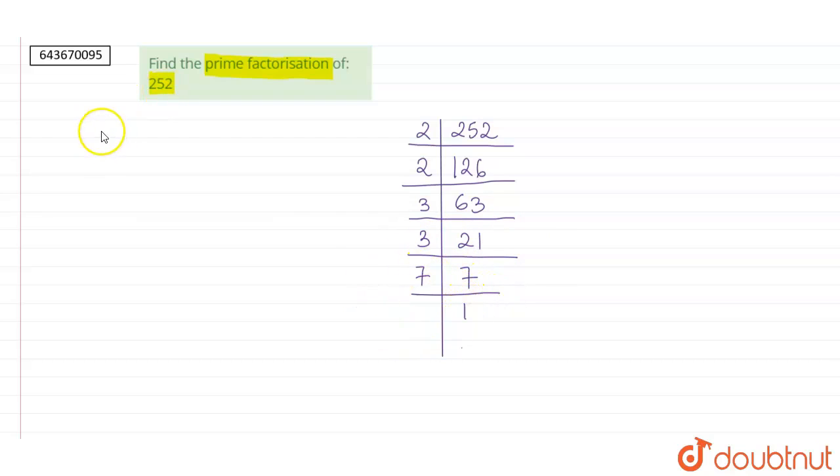So we can write 252 as 2 × 2 × 3 × 3 × 7, which equals 2² × 3² × 7¹. This is the prime factorization of 252.